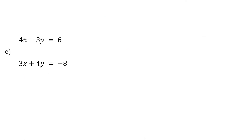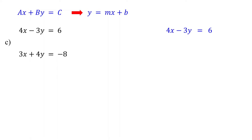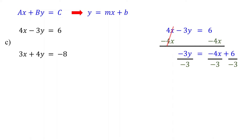Now let's shift our focus to perpendicular lines. Both equations are in standard form, so start by converting them to slope-intercept form. For the first equation, begin by subtracting 4x from both sides. Then divide both sides by negative 3 to isolate y. Now the first equation is in slope-intercept form.